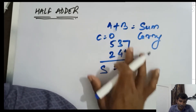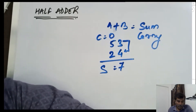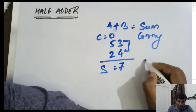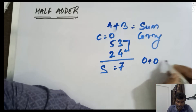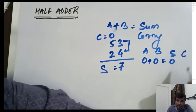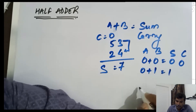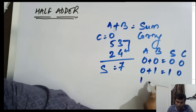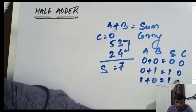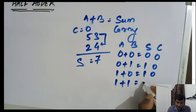You get seven, and the carry is zero — sum equals seven. This is an example of decimal addition. Similarly, in the same manner, we add binary bits also. When zero is added with zero, the sum is zero. When zero is added with one, the sum is one and the carry is zero.